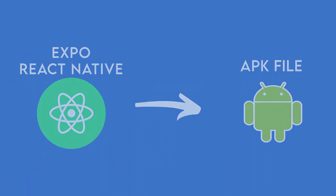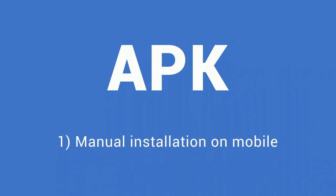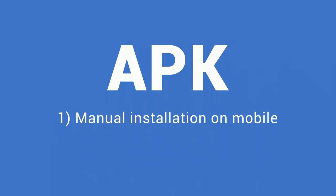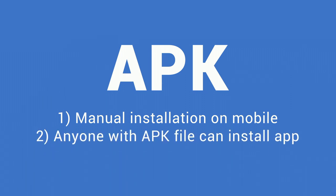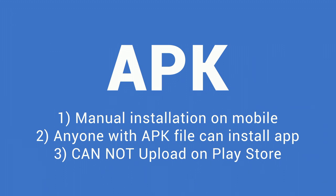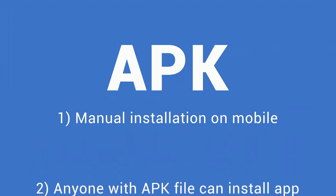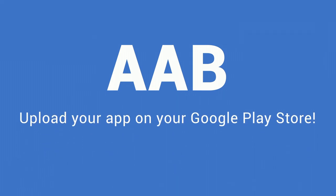If you are new to mobile development, remember that an APK file is used to install your app manually on your phone — anyone with the APK can install it, but it cannot be uploaded to the Play Store. That's when we create an AAB file. Whenever we want our app to be on the Play Store, we create an AAB file, and that is exactly what we are going to learn today.